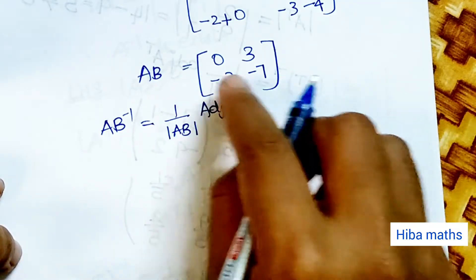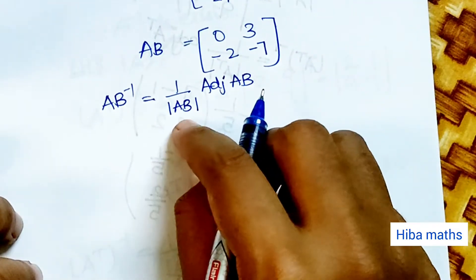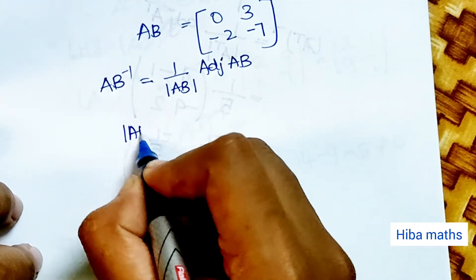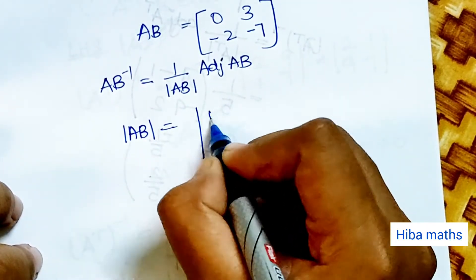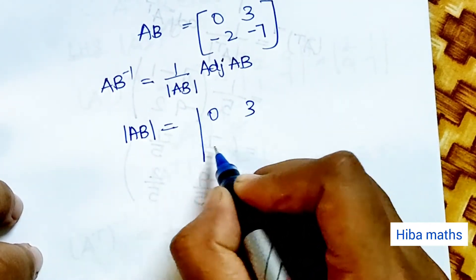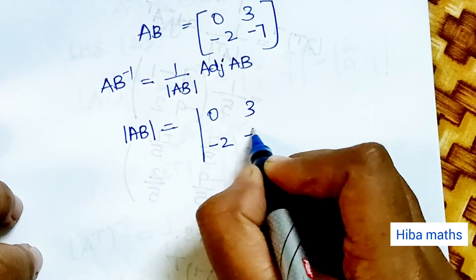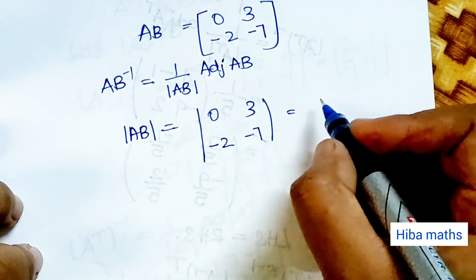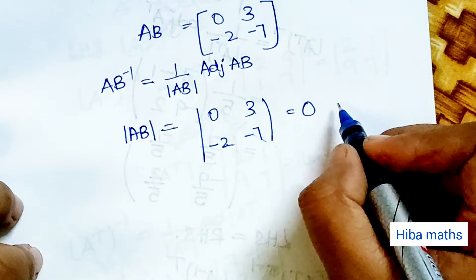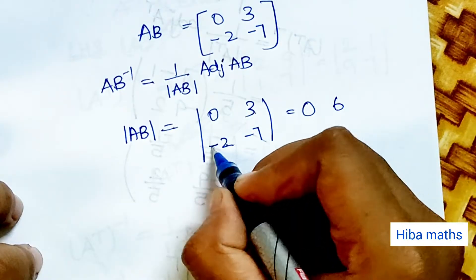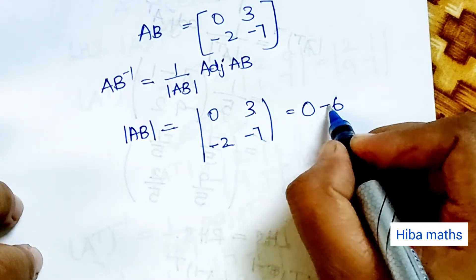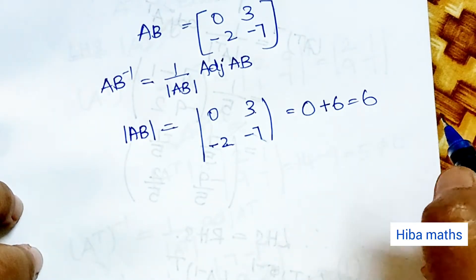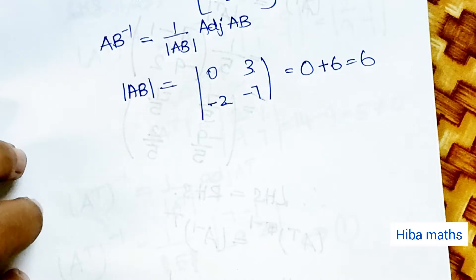Now AB is easy to write, so modulus of AB is easy to compute. Modulus of AB equals 0 times −7 minus 3 times −2, which gives 0 plus 6, so the answer is 6.